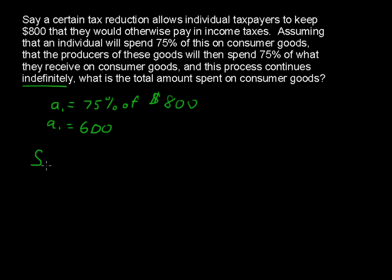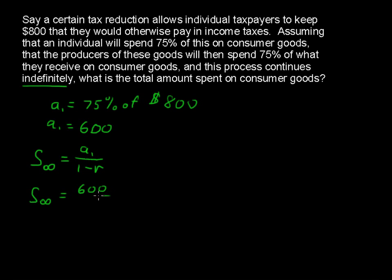There's a formula for the sum of an indefinite, or infinite, number of terms. The sum equals a sub 1 over 1 minus r. The formula is really that simple. In our example, it goes on indefinitely, and we say a sub 1 is 600 divided by 1 minus 0.75.